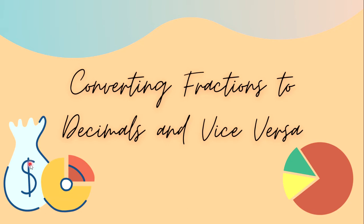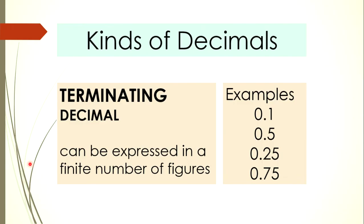We have here two kinds of decimals. The first one is what we call the terminating decimal. When we say terminating decimal, it can be expressed in a finite number of figures, or the decimal numbers are limited — they can be counted.